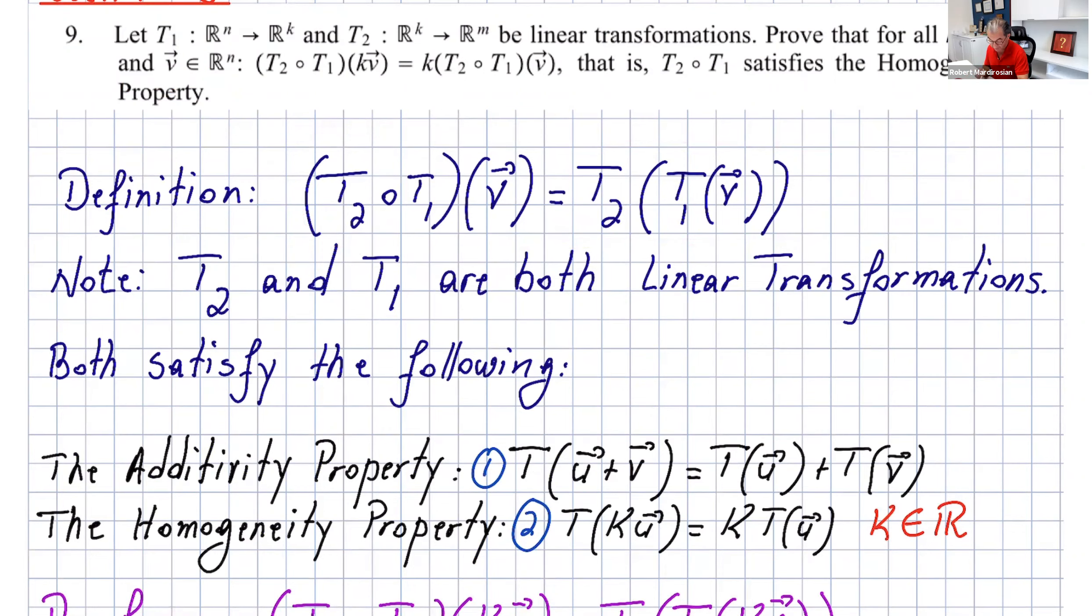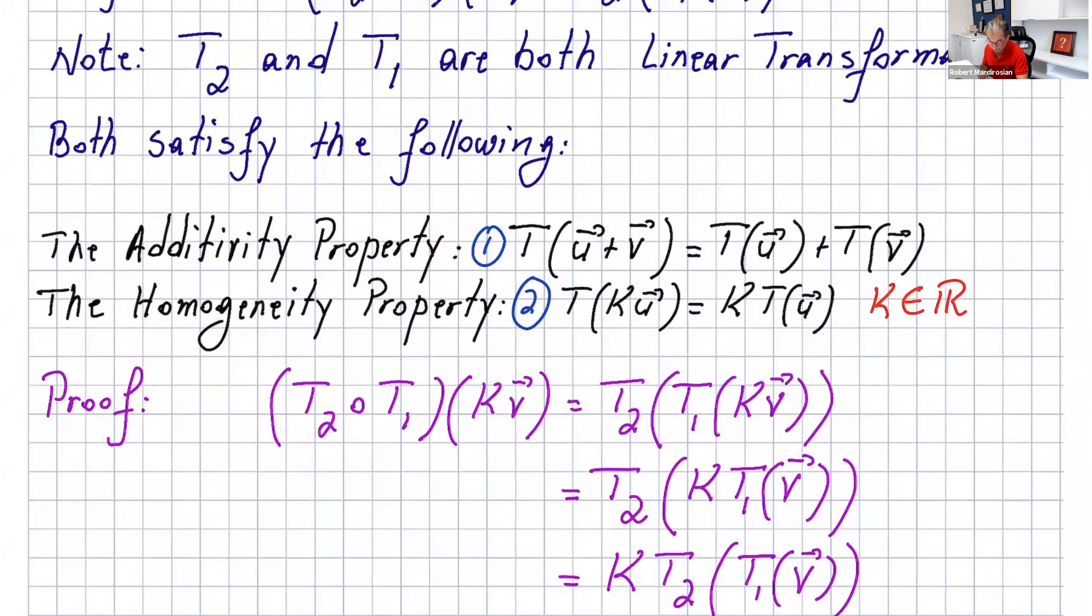If we start, (T₂∘T₁)(kv) is the same thing as T₂(T₁(kv)). That's a linear transformation, so I can write that as T₂(k·T₁(v)).